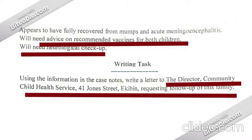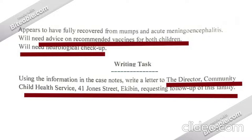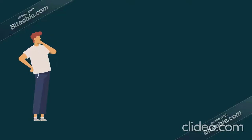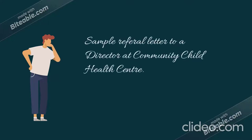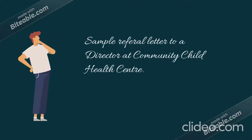When you come to the recommendation part, mark it differently — with a tick mark, a star, or anything that helps you easily find the recommendations when writing that paragraph, so you won't get confused. Put the tick mark on 'advice on recommended vaccines for both children' and on 'neurological checkup.' We have only two recommendations in this letter.